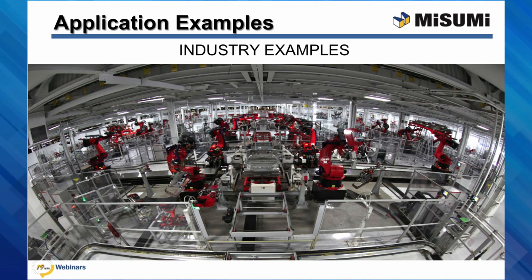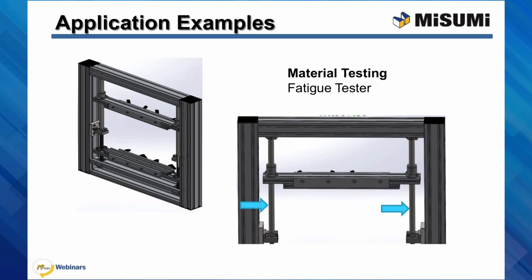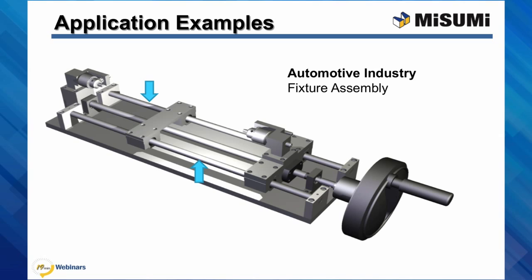We will review some customer-submitted industry examples using Misumi linear shafts. The first design is for material testing — a combination of linear shafts, linear bushings, and other components used to create a fatigue tester. The upper portion of the workpiece holder is connected to two linear bushings which travel along the shaft, allowing for accurate and easy movement of the mechanism. This design uses hardened linear shafts to prevent deformation while maintaining the precision necessary to properly perform the fatigue test. The next example uses linear shafts to create a fixture assembly commonly used in the automotive industry. The slide unit is driven by a manually operated lead screw assembly guided by a set of linear shafts and bushings, held in place by split shaft supports which clamp onto the ends of the shaft.